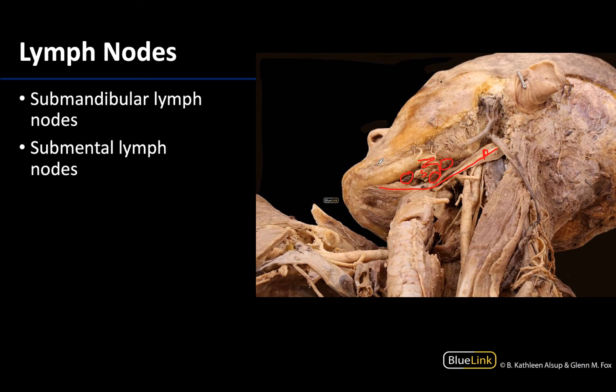Looking more into the submental triangle region, you can see a submental lymph node right about here. These lymph nodes will drain structures from the submental triangle on the inferior portion of the mylohyoid muscle, and will drain lymph either into the submandibular lymph nodes or into the jugulo-omohyoid nodes, which are going to be a bit more inferior.